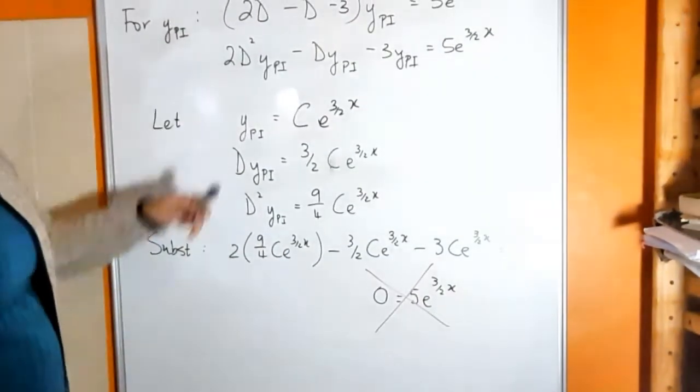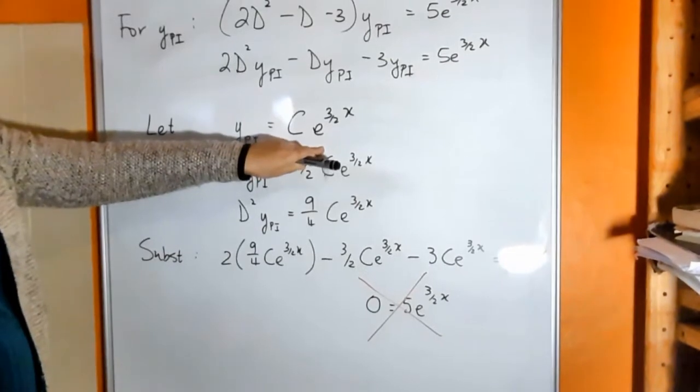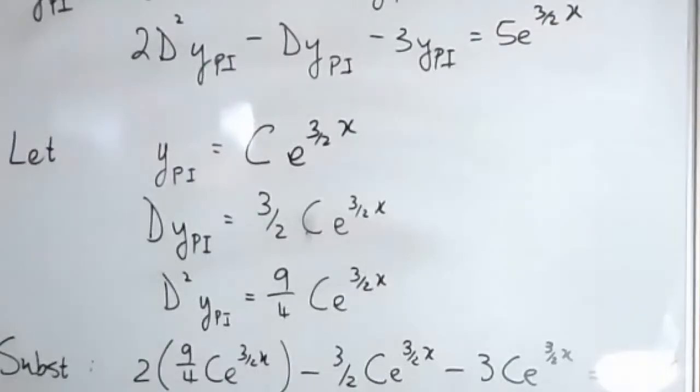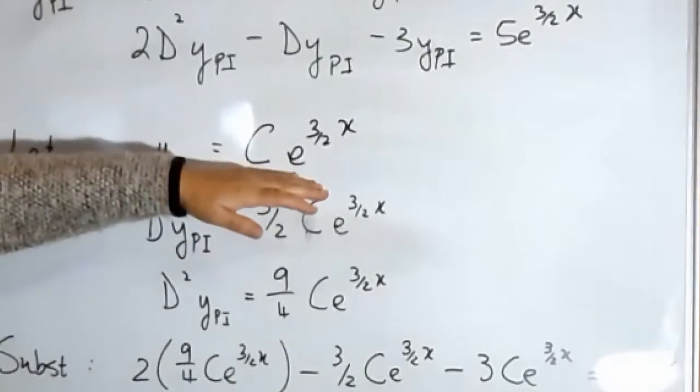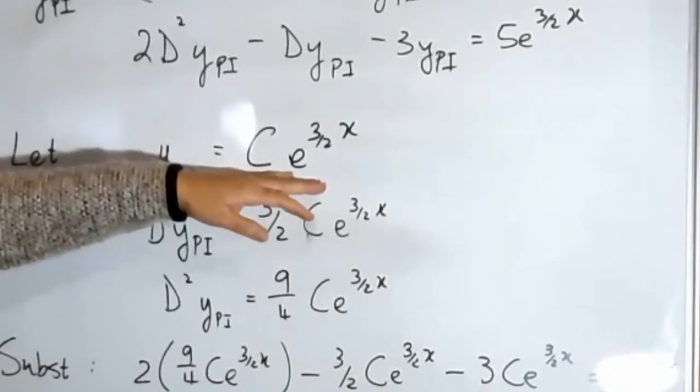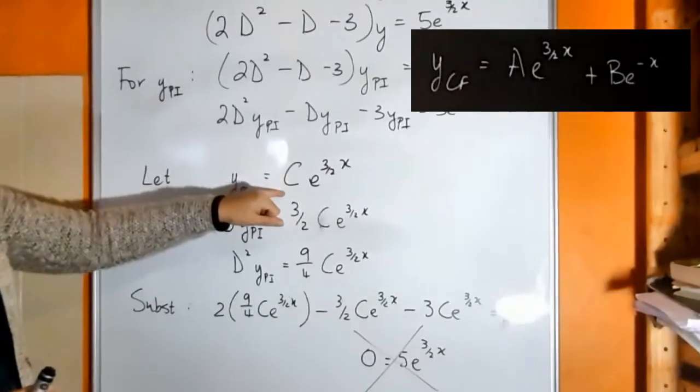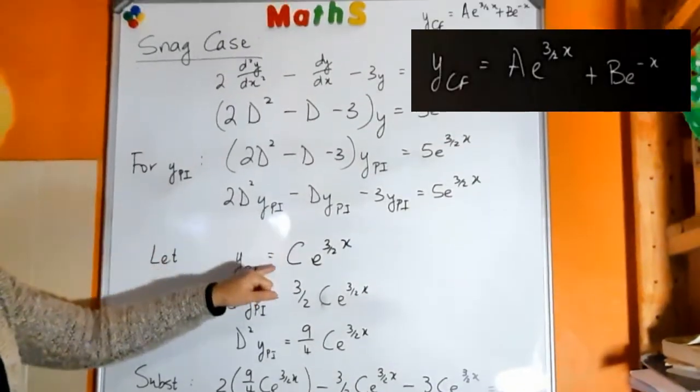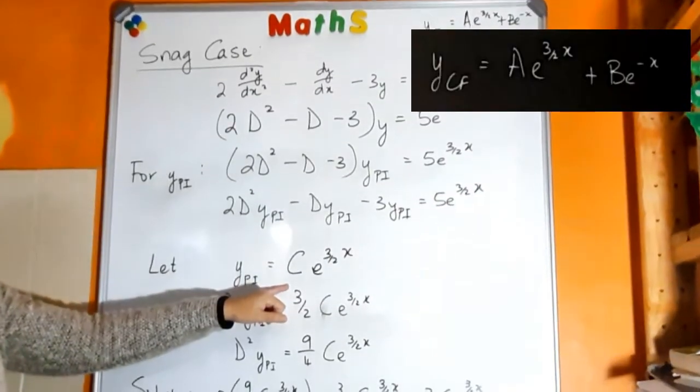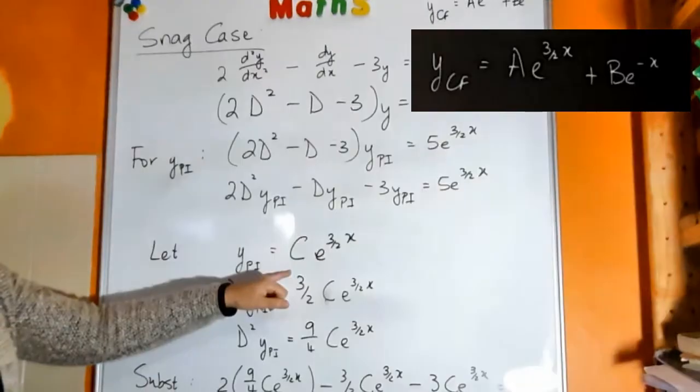Which means that the trial function that you've chosen is not the correct one. Now, if you look at what your trial function you've chosen here, and you look at the complementary function, you will see that the form of the trial function you've chosen is the same as the first term in your complementary function.